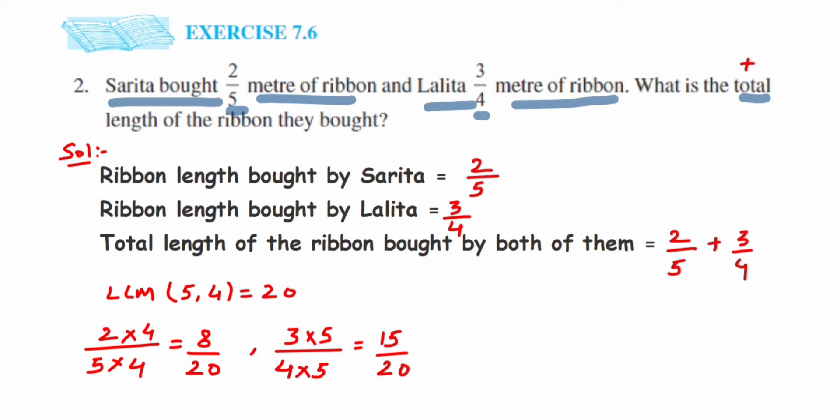Since we got equivalent fractions with denominator 20, we can easily add them because they're like fractions now. In place of 2/5, I'll write 8/20, and in place of 3/4, I'll write 15/20. Keep the denominator the same, which equals 20, then add the numerators: 8+15=23. We get 23/20 meters of ribbon together.